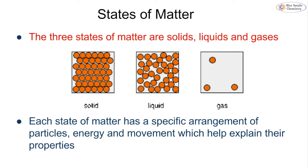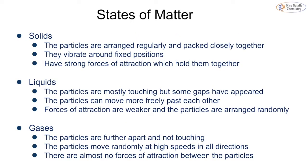There are three states of matter — you will have learned this back in Key Stage 3, most likely in Year 7. We have solids, liquids, and gases, and each state of matter has a specific arrangement of particles, a specific energy, and movement which helps explain the properties. In the solid, all particles are packed tightly together and all touching each other, while in a liquid they have a little more space, and in a gas there are lots of spaces between particles.